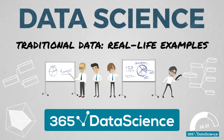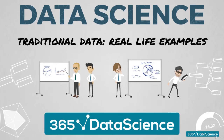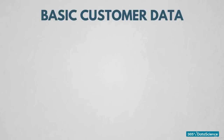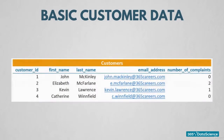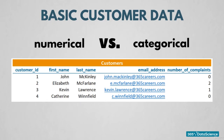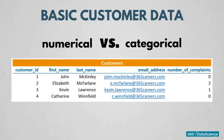Let's provide a couple of traditional data examples. Think of basic customer data — the type of dataset we use in our SQL course. This table contains text information about a given customer. We're going to use it to give a clear example of the difference between a numerical and categorical variable.